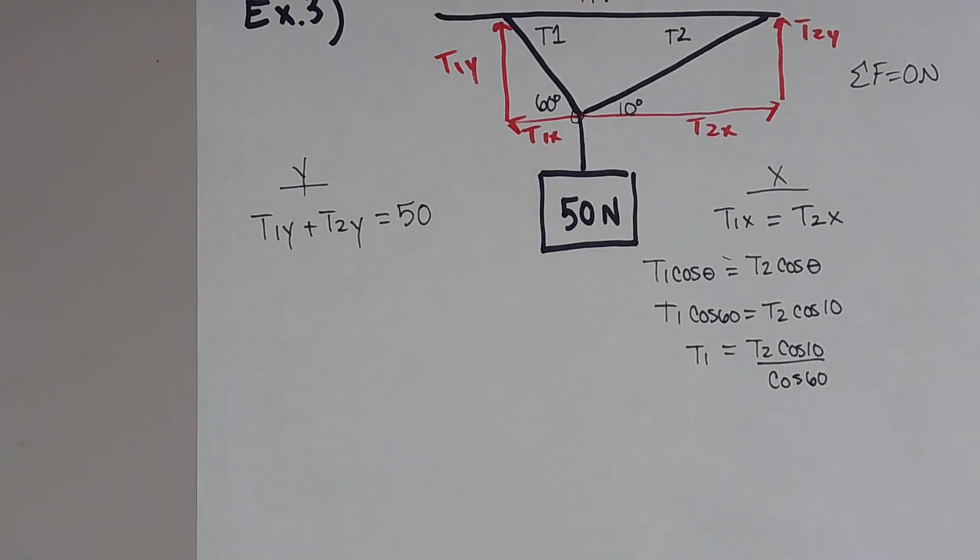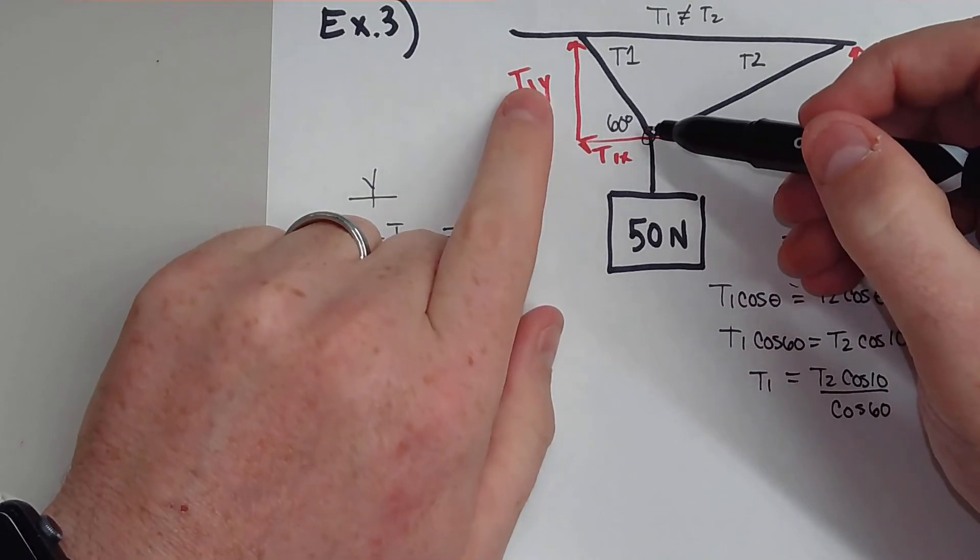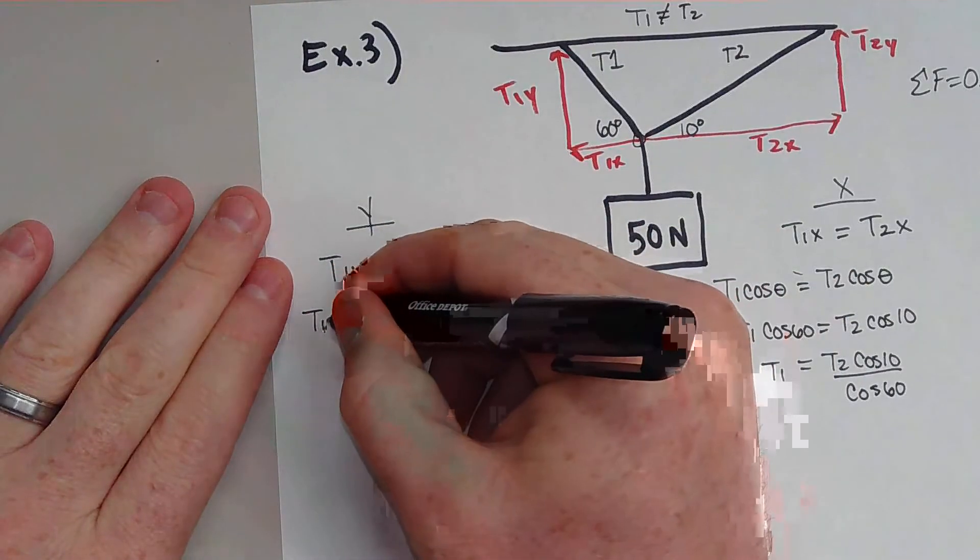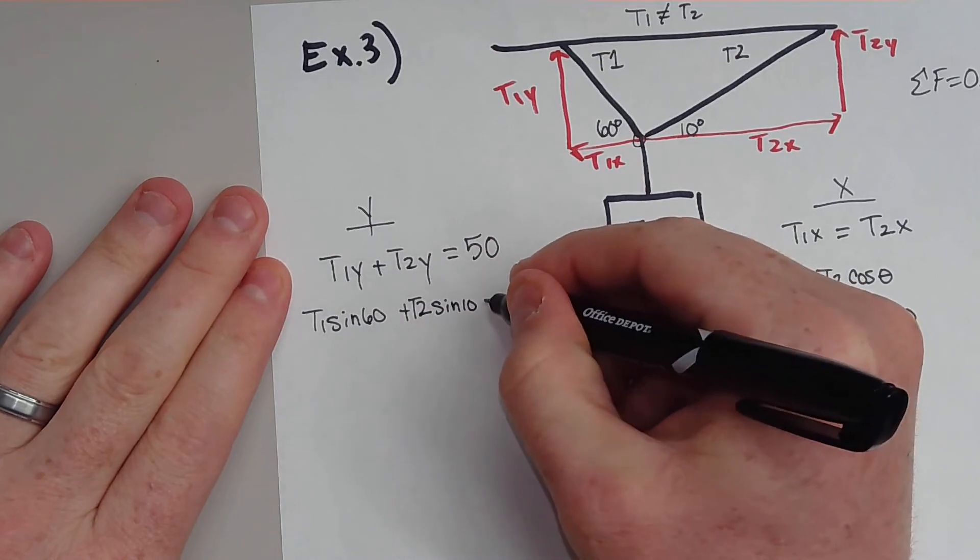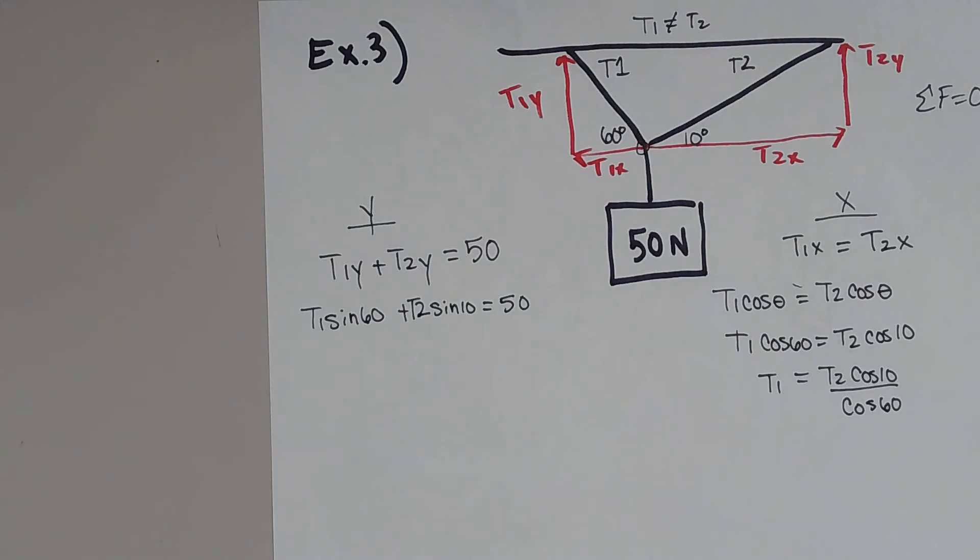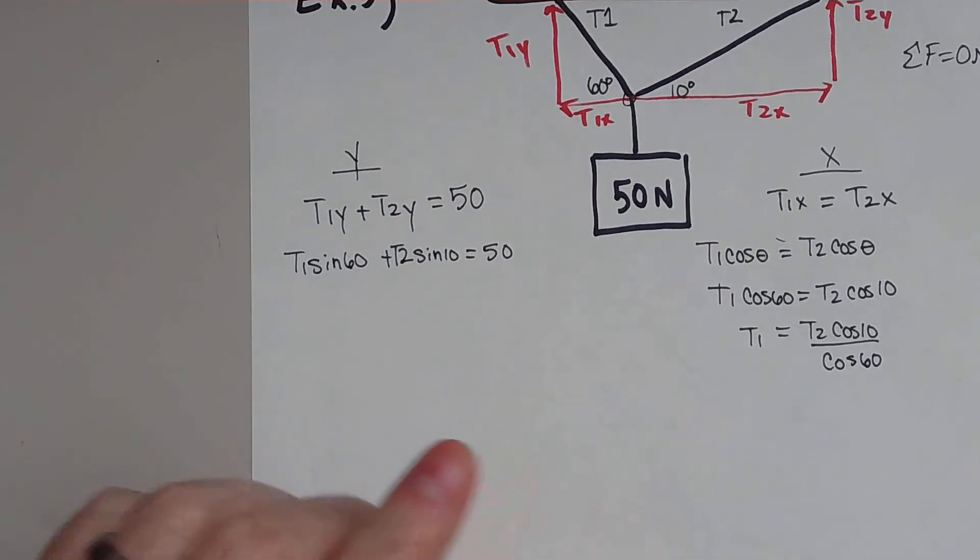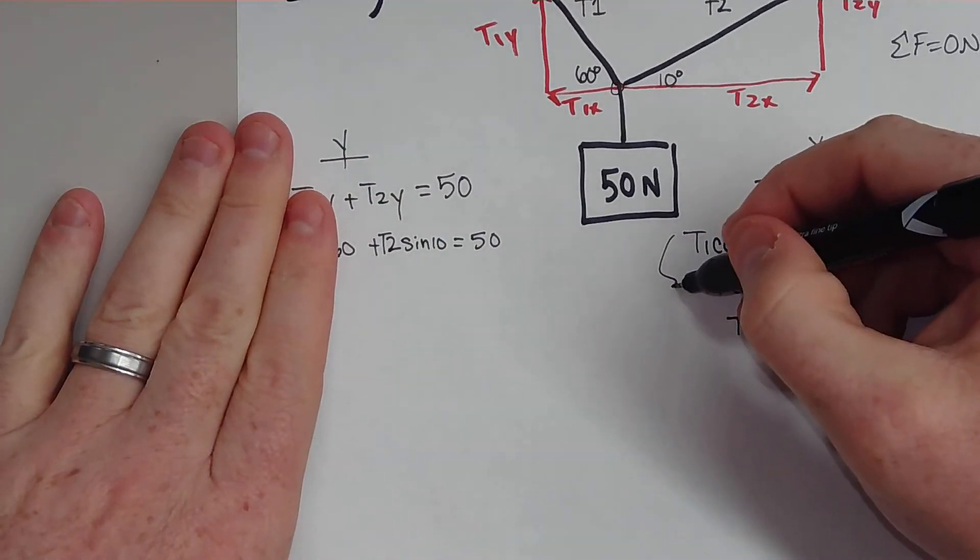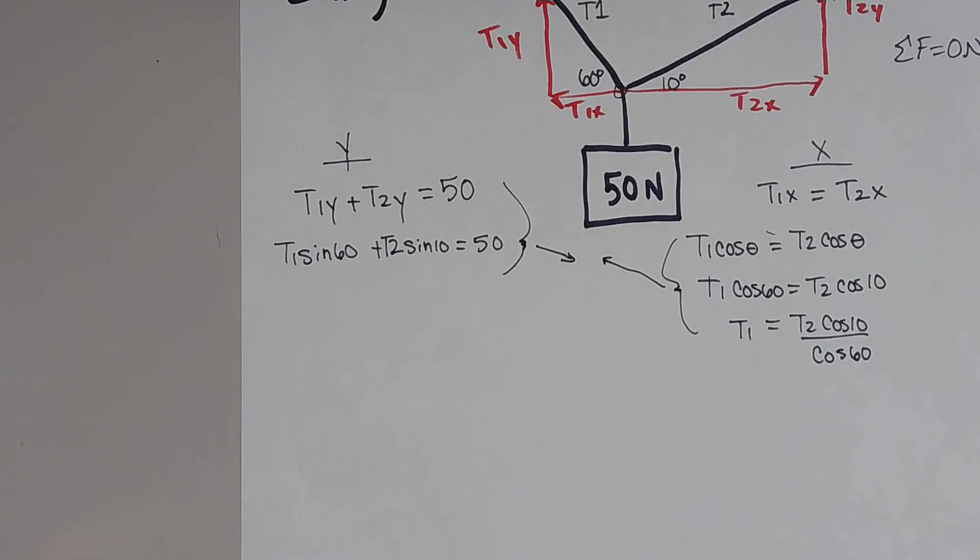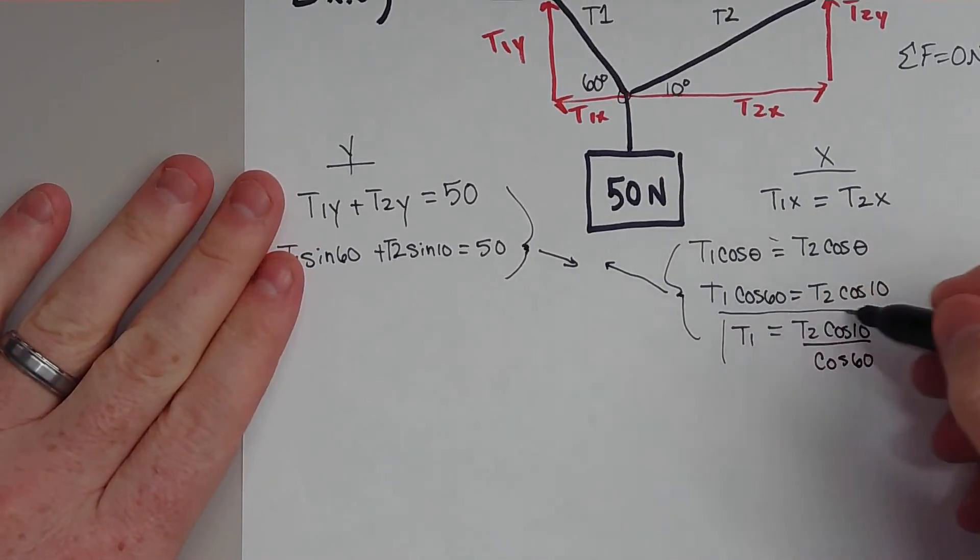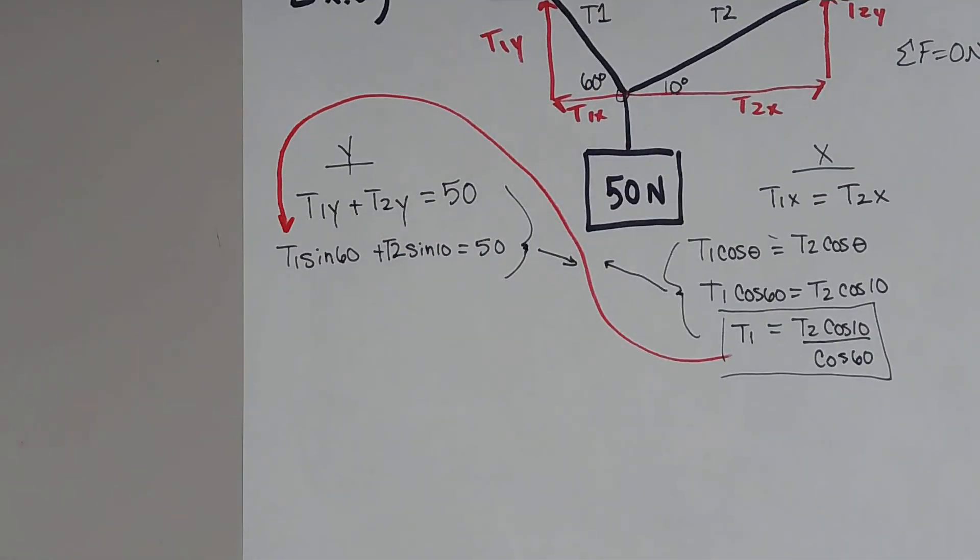Notice we still have two unknowns, so we really can't solve for anything. But over here, let's do the same thing, except T1Y. It's the opposite and the hypotenuse. So that's actually going to be sine. So T1 sine of 60 plus T2 sine of 10 equals 50 newtons. So now, we still have two unknowns over here, and we have two unknowns over here. But we actually solved for T1, and this is why this step's important. We are now going to take the X and Y and combine them together. So we're going to take this T1 right here, this very important value, and we're going to plug it in right there.